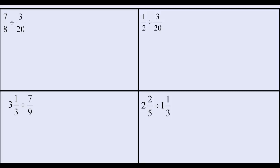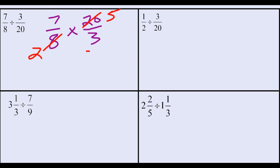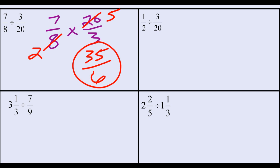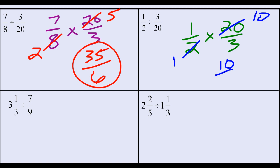Here are the answers. In the upper left-hand corner, dividing by three-twentieths means multiplying by twenty over three. Simplify twenty and eight by dividing by four, and we end up with thirty-five-sixths, which is five and five-sixths. In the upper right-hand corner, one-half divided by three-twentieths is one-half times twenty over three. Divide two and twenty both by two, and the quotient is ten-thirds. If you multiplied across first to get twenty over six, simplifying still gives ten-thirds.